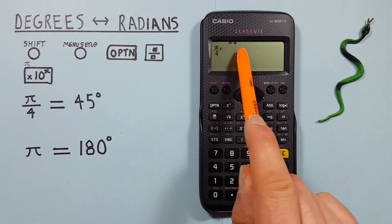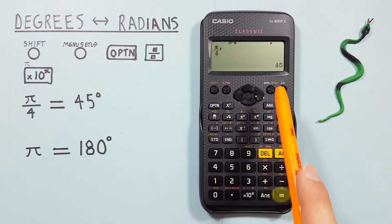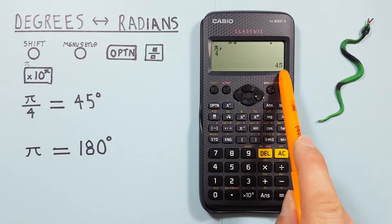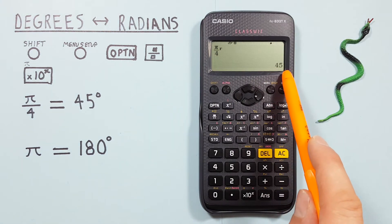In degree mode, if we press equals, we see we get a result of 45. So π over 4 radians is the same as 45 degrees.